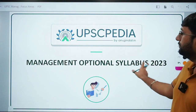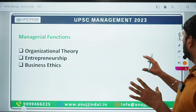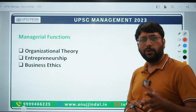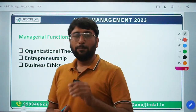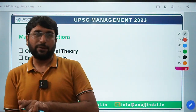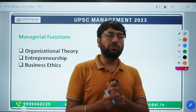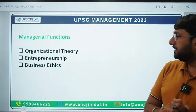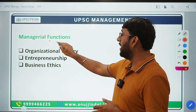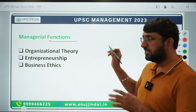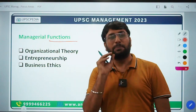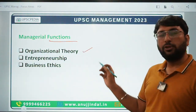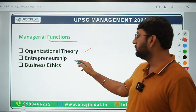The first thing is that your entire syllabus is divided into two papers: Paper 1 and Paper 2. Let's first talk about Paper 1. The first subject you'll find in Paper 1 is Managerial Functions, which has three specific components: Organizational Theory, Entrepreneurship, and Business Ethics.